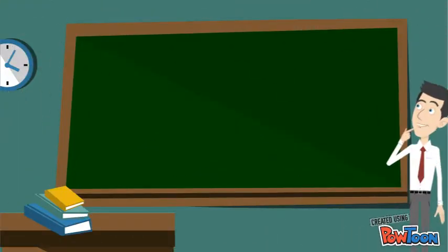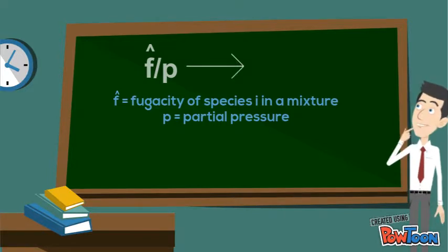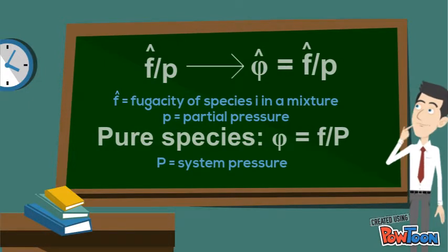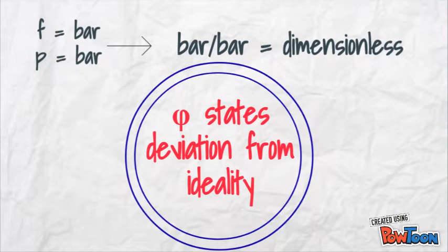Lewis noticed that the fugacity of species i in a mixture over partial pressure kept appearing when dealing with his newly constructed fugacity term, and so he coined this expression as the fugacity coefficient, with the symbol phi. The fugacity coefficient is dimensionless and states whether or not the species is deviating from ideality.